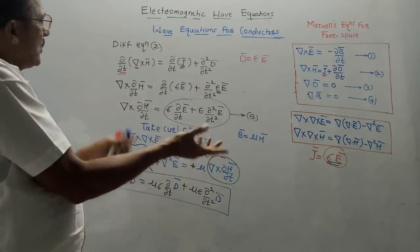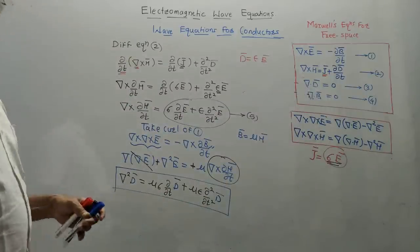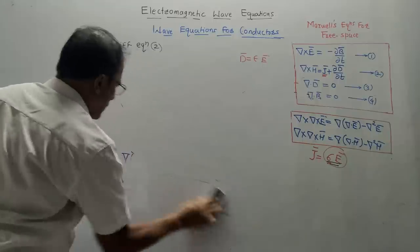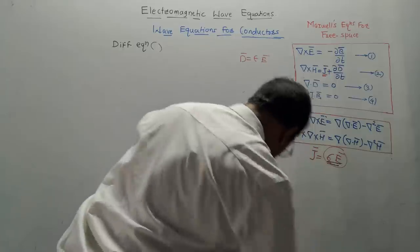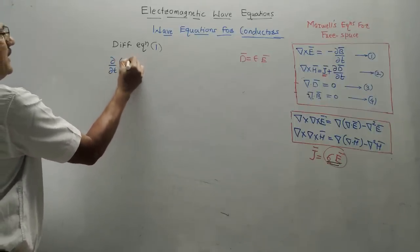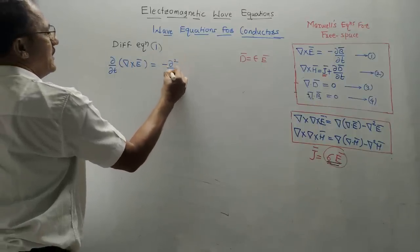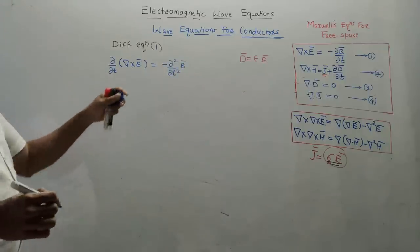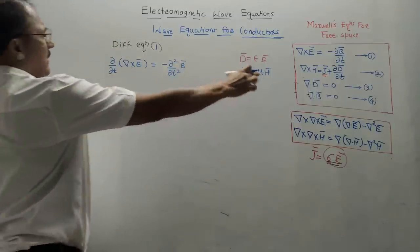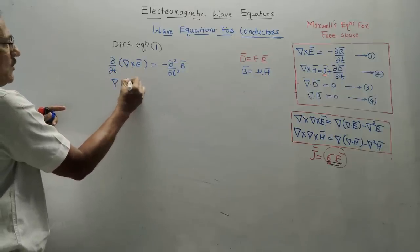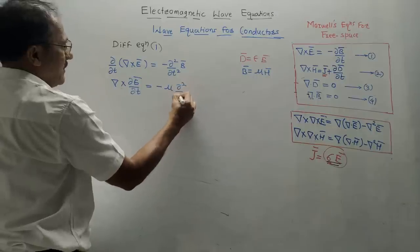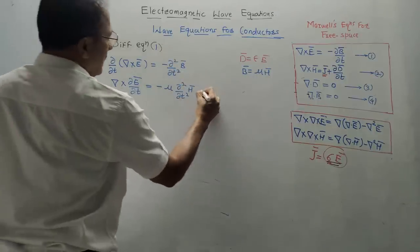Now do the reverse: differentiate equation 1 with respect to time to get: ∂/∂t(del × Ē) = −∂²B̄/∂t². Substitute B̄ = μH̄ and interchange del and ∂/∂t: del × (∂Ē/∂t) = −μ ∂²H̄/∂t². This is equation number 6 for conductors.